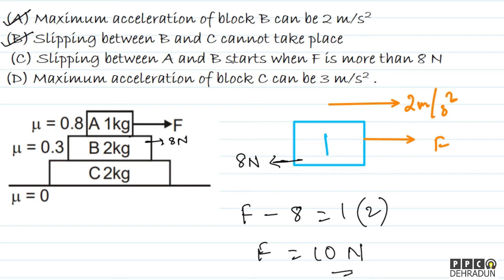Option C states slipping between A and B starts when F > 8 N, but actually slipping starts when F exceeds 10 N, not 8 N. So option C is incorrect.